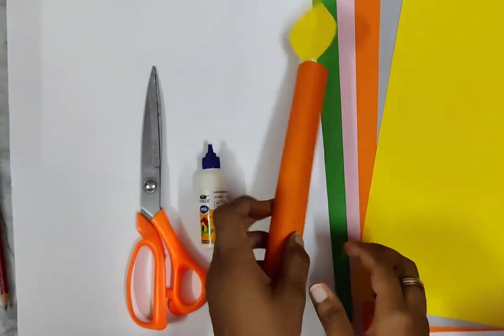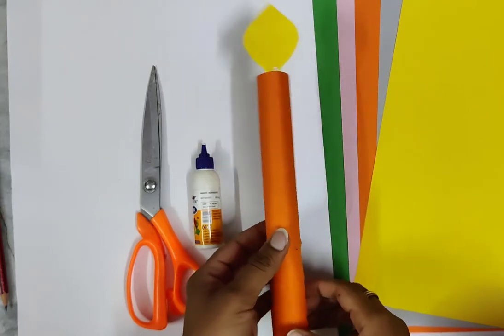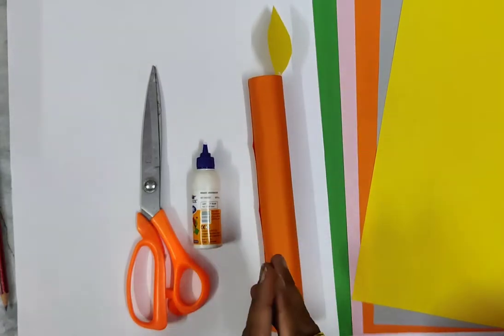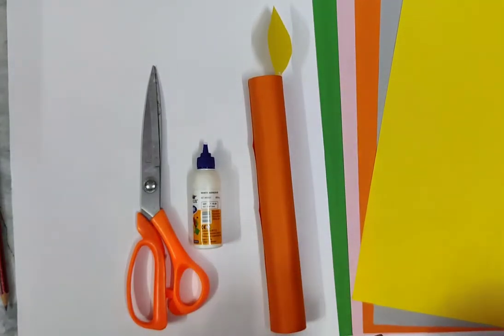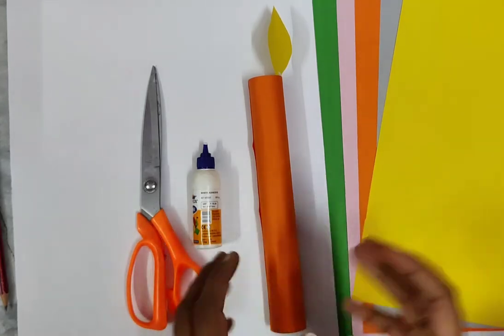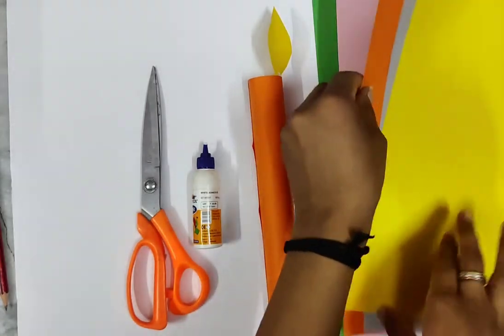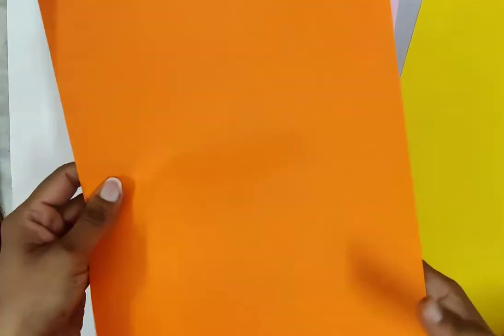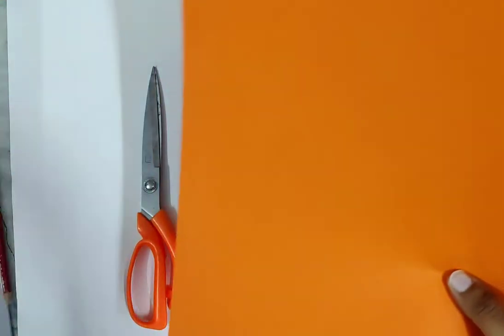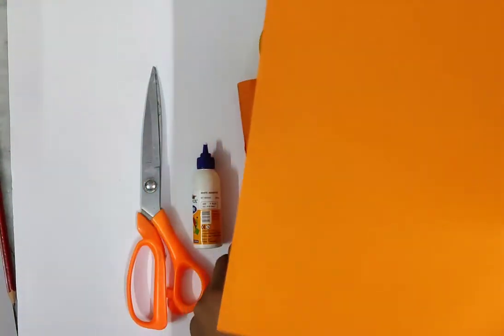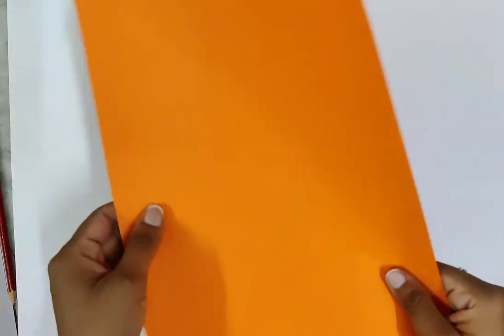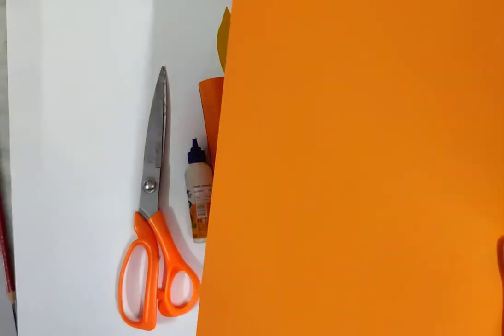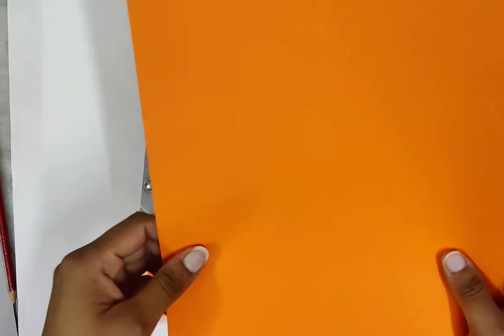We are going to start a simple origami candle. This is your Diwali activity. In this activity we are going to pick first orange color. Here I am using an orange pastel sheet. You can use any other color also because it's your colorful candles, so I'm picking orange color. You can pick any other color which you like.